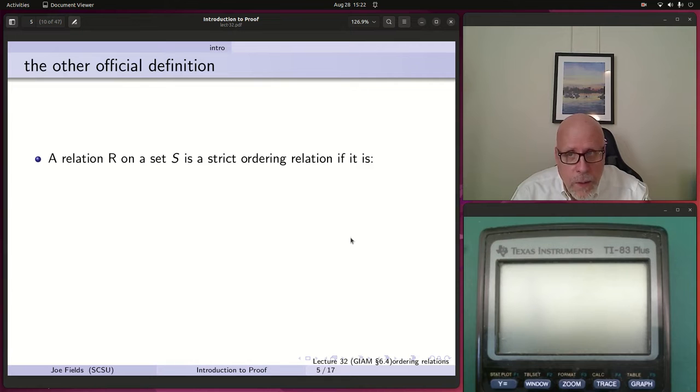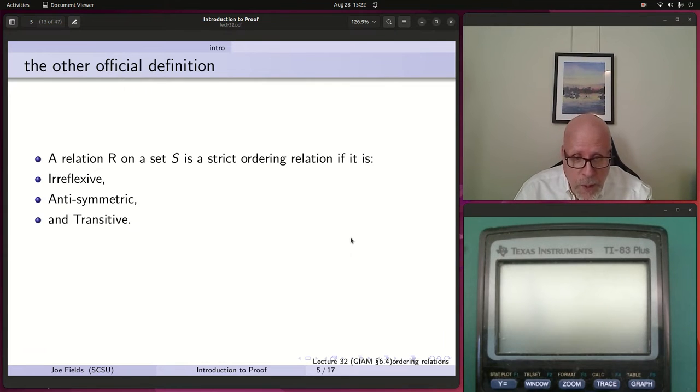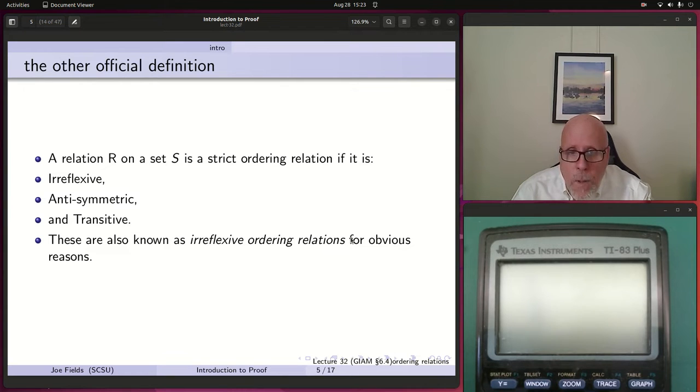There is another official definition. Some people will define an ordering relation as a kind of analog of less than rather than less than or equal. So it would be irreflexive, also antisymmetric and transitive. I don't call that an ordering relation, but that's something to watch out for. We call that a strict ordering or an irreflexive ordering relation.